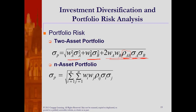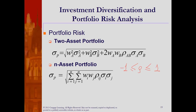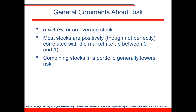An important element here is the correlation coefficient, which is a statistical measure of the strength of the relationship between the relative movements of two assets. It ranges between negative one and positive one. The closer it is to one, the stronger the positive relationship; the closer it is to negative one, the stronger the negative relationship. Standard deviation of a portfolio is approximately 35% for a portfolio of average stocks. Most stocks are positively correlated — the correlation coefficient rho is somewhere between zero and one — and combining stocks in a portfolio generally lowers risk.